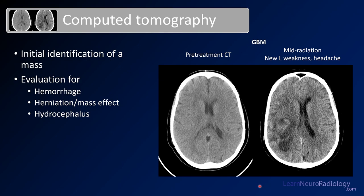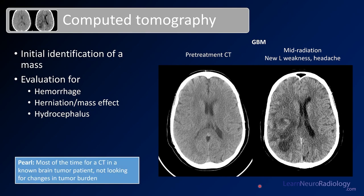This is a successful use of CT in a patient with a known brain tumor. Most of the time on CT, you're not looking for changes in tumor burden. You can comment in the report that this is not designed to evaluate overall tumor burden, but neuro-oncologists following brain tumors know that — they're often doing CT to look for those complications.